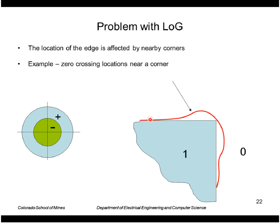You can see that in the case of a corner: if I were to take the Laplacian of a Gaussian template and slide it over this corner, the trace of the zero crossing produced would bulge out in the vicinity of the corner, pass through the corner point, and bulge out again on the other side. The negative part balances the positive part — the total area is zero — so the template becomes unbalanced when you get close to the corner. That's an undesirable artifact.